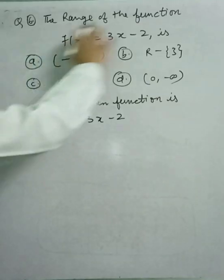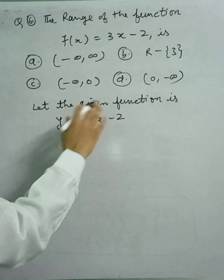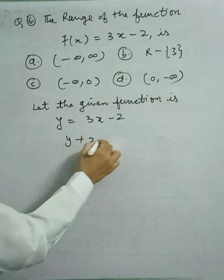The range of the function f(x) = 3x - 2. Let the given function y = 3x - 2. So y + 2 = 3x, which gives x = (y + 2) / 3.